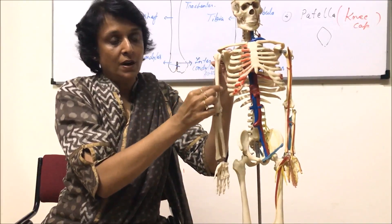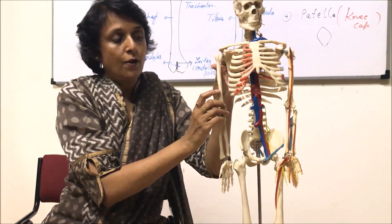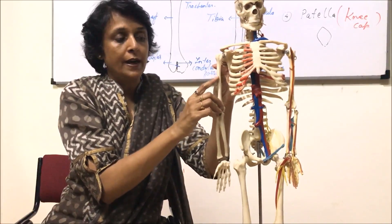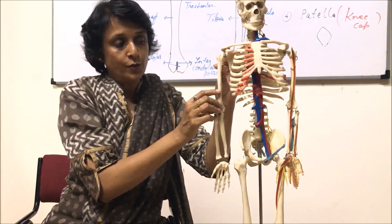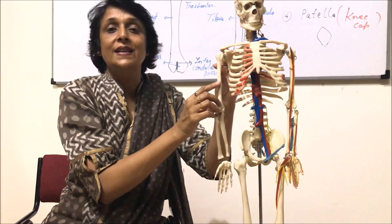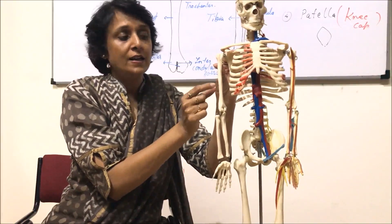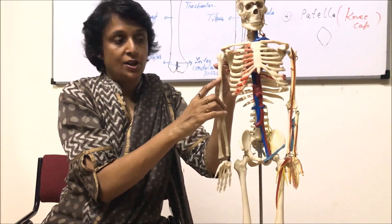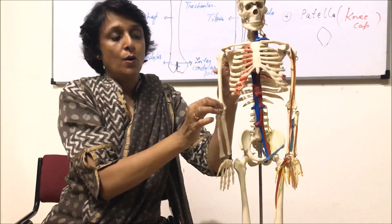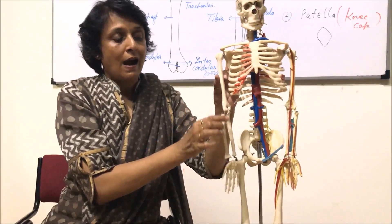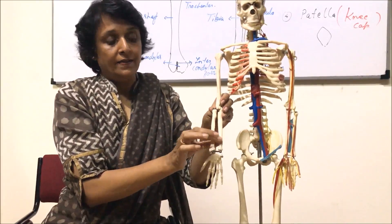This is the head part; this middle long bony part is known as the shaft. If you observe it carefully, we find a little bulge in the middle part, and this bulge in the middle region is the deltoid ridge. This part becomes a little wider so that the muscles can get attached, so this ridge-like structure is the deltoid ridge. The lower part of the humerus articulates with the other bones below it.